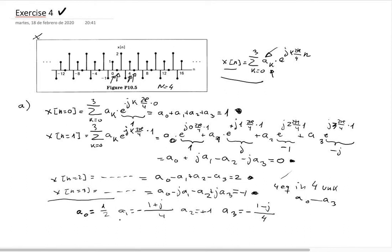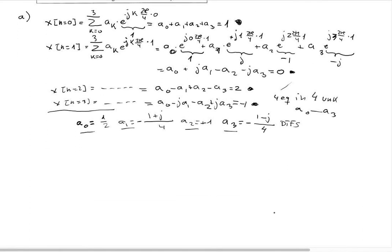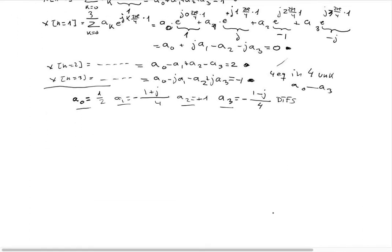So we have a_0, a_1, a_2, a_3 — we have already completed the decomposition of x[n] into complex exponentials, i.e., the Discrete Time Fourier Series. Notably, we did not use the standard analysis equation to calculate the coefficients a_k at all; we just applied the definition of the DTFS and solved the equations directly.